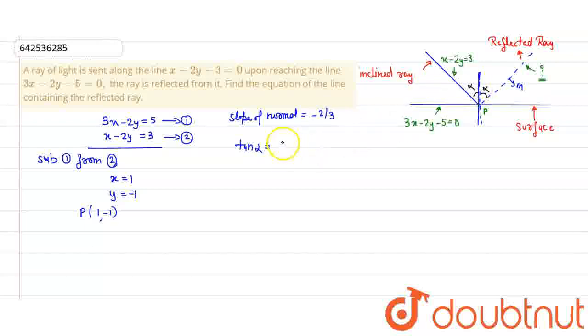So, tan alpha is 1/2 minus minus 2/3 upon 1 plus 1/2 minus 2/3. This normal will form the same angle with the reflected ray.